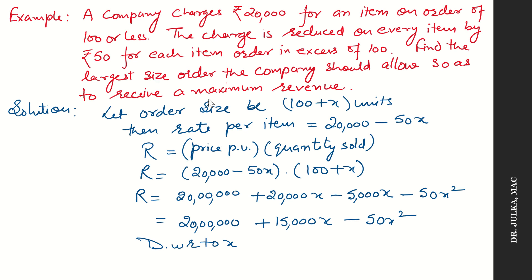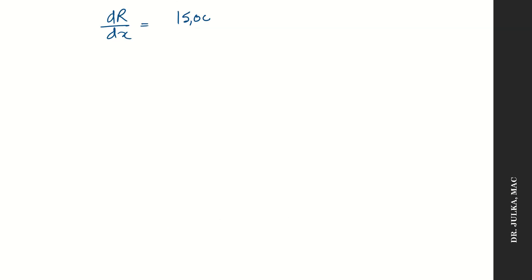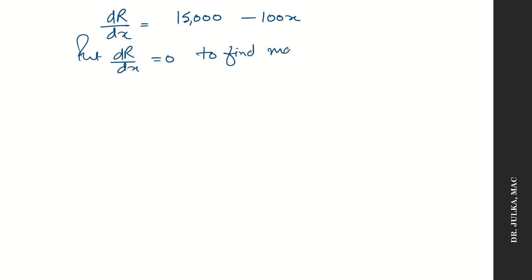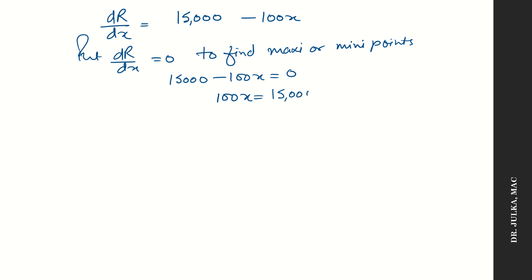Now in order to find maximum revenue, we differentiate with respect to x. We get dR/dx equal to 15,000 minus 100x. Put dR/dx equal to 0 to find maximum or minimum points. So 15,000 minus 100x equals to 0, giving 100x equals to 15,000, and the value of x is 150.